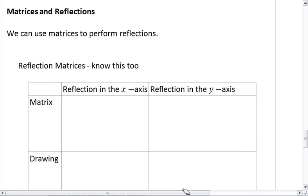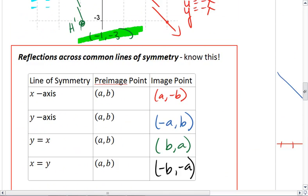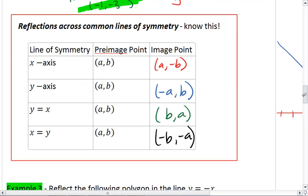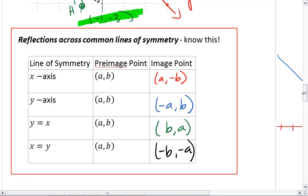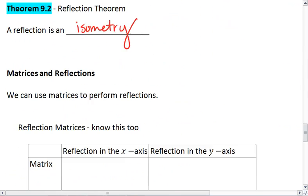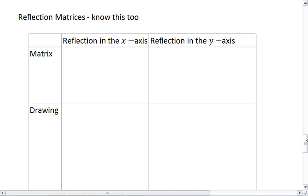For matrices and reflections, we find that we can use matrices to perform reflections as well. Just like above, where we see the coordinates and patterns with the coordinates, if we reflect across the x-axis, our point AB becomes A negative B. So the x-coordinate stays the same, and the y-coordinate changes its sign. We can see the same pattern, and we can use matrices to solve for reflections.